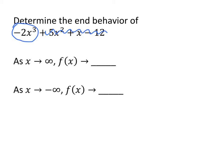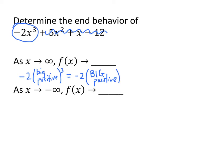So what happens as x goes to infinity? That means we have negative 2 times a big positive number raised to the third power. When I take a big positive number and multiply it by itself three times, the number gets really, really big and stays positive. So I have negative 2 times a really, really big positive number. Since I'm multiplying a negative by a positive, what I get is a big negative number. That means that as x goes to positive infinity, f of x is going to go to minus infinity.